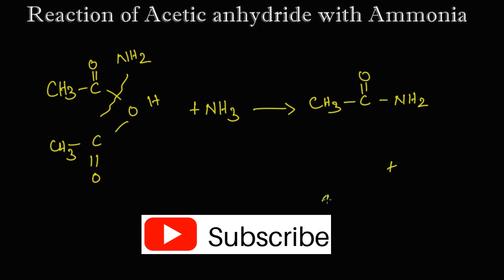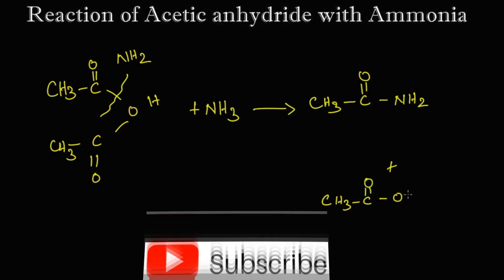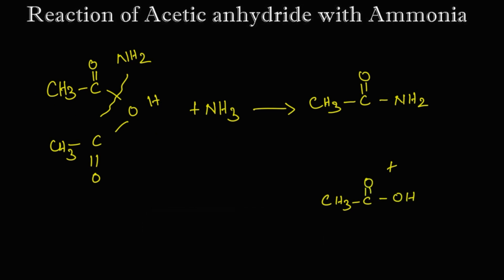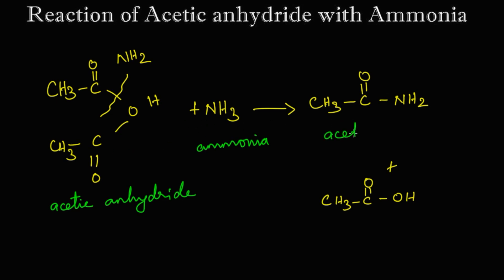The other part, CH3COOH — that is CH3C(=O)OH — this is acetic acid. So, acetic anhydride reacting with ammonia gives us acetamide and acetic acid as the two products.